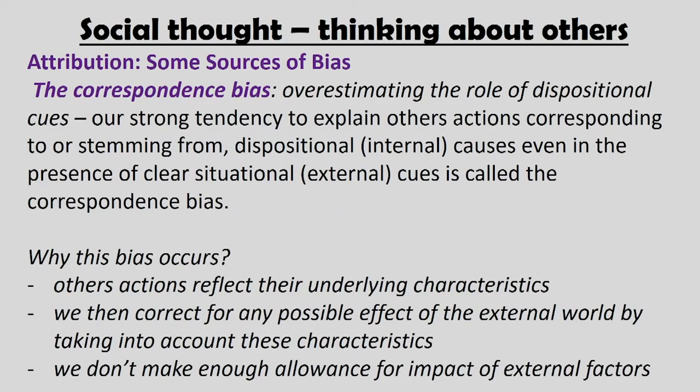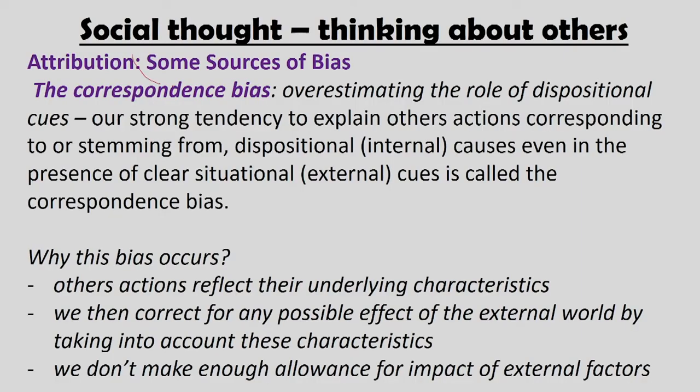As we give meaning to other people's behaviour, we are prone to a number of biases. Any process where we assign meaning to people's acts is prone to errors, because human beings are signal processing machines and are never perfectly accurate. One of the first attribution errors is called the correspondence bias.